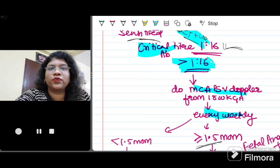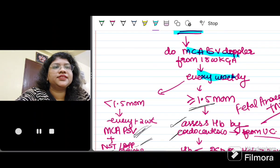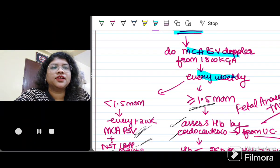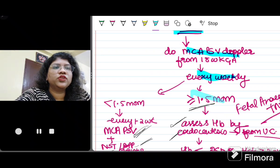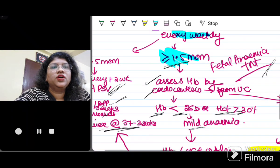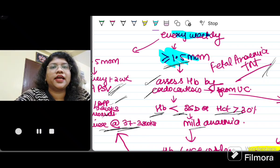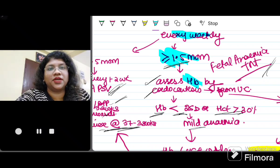Now why is it done? It is done to look for fetal anemia. It is done every weekly. It is given converted into MOM. So if it is more than equal to 1.5 MOM, now it means fetal anemia is present. Now we have to assess how much anemia.